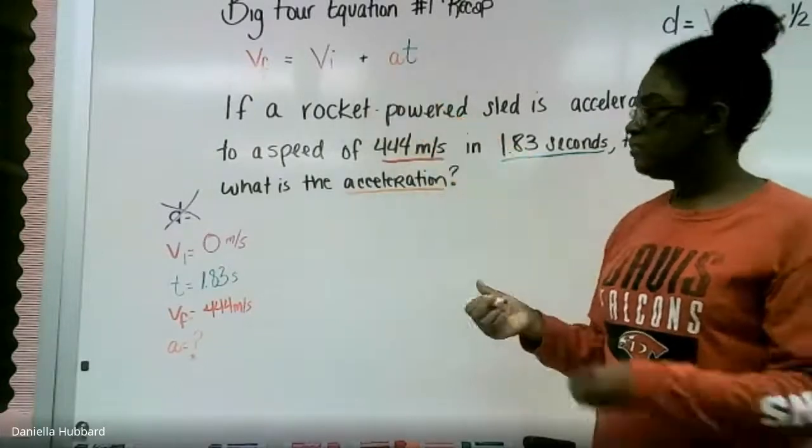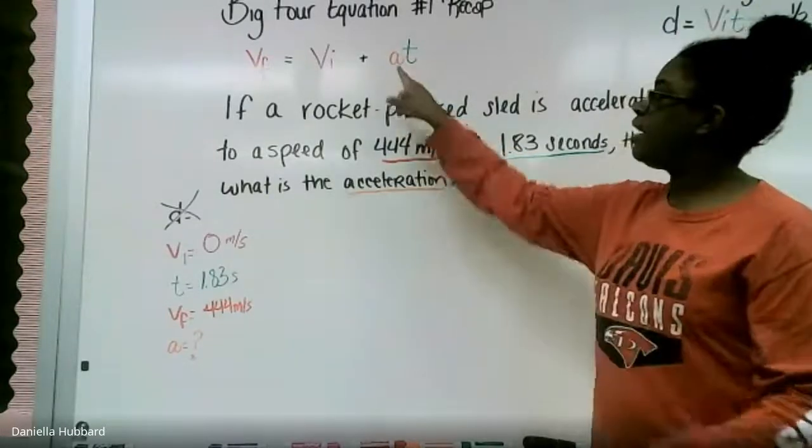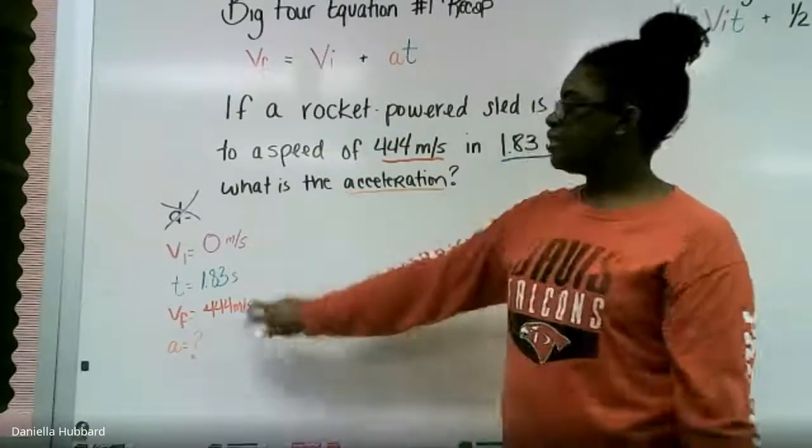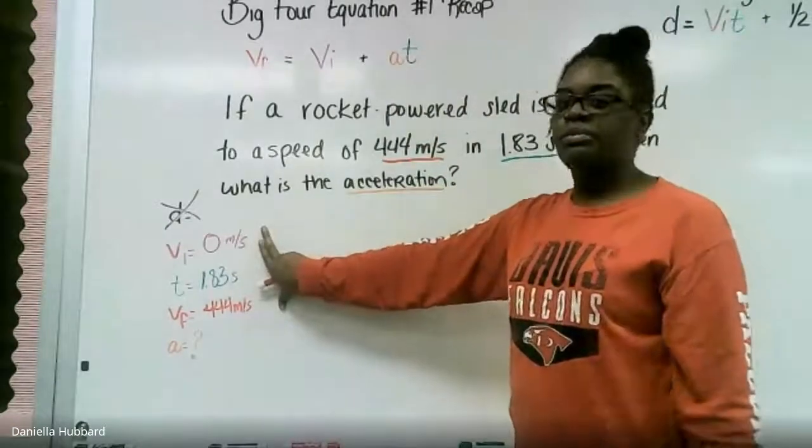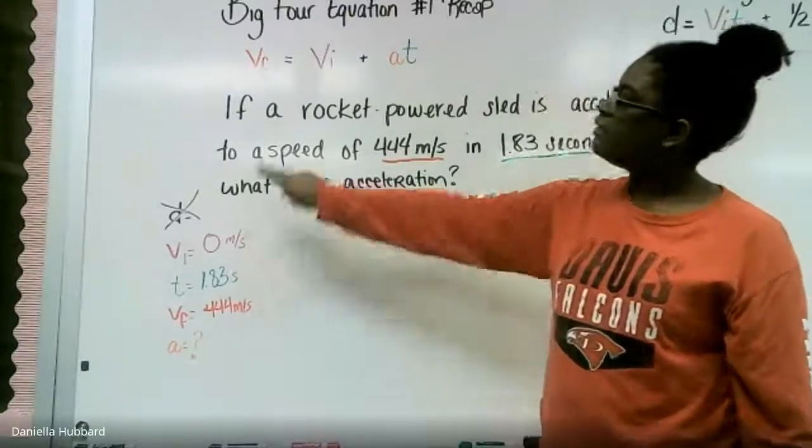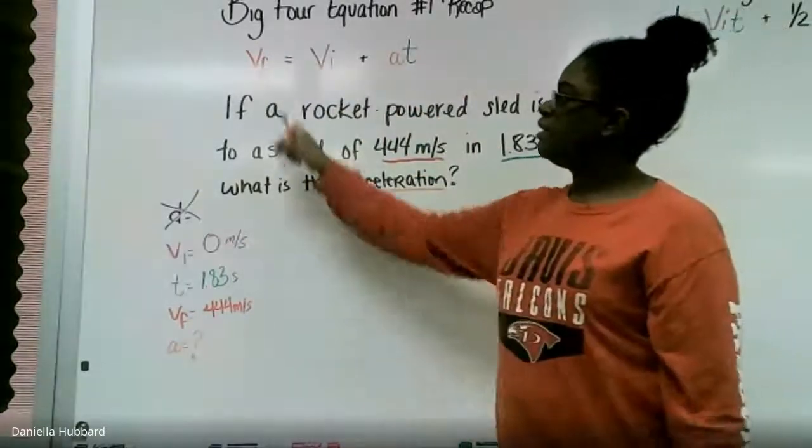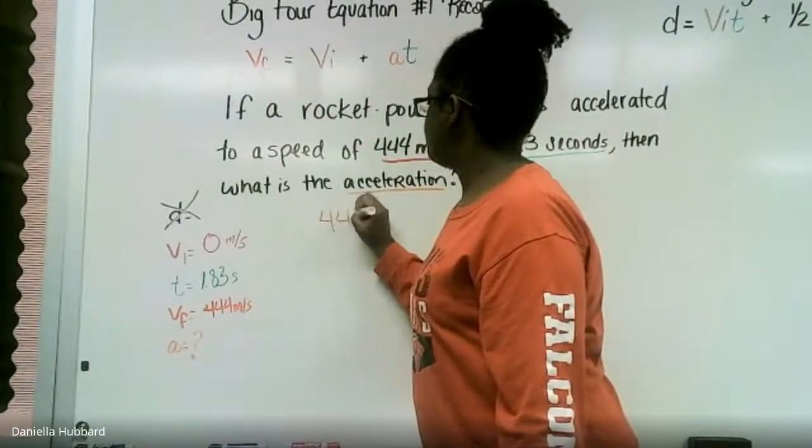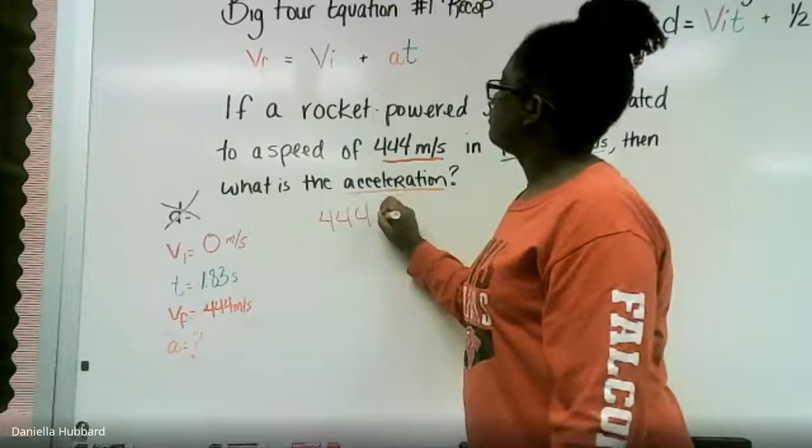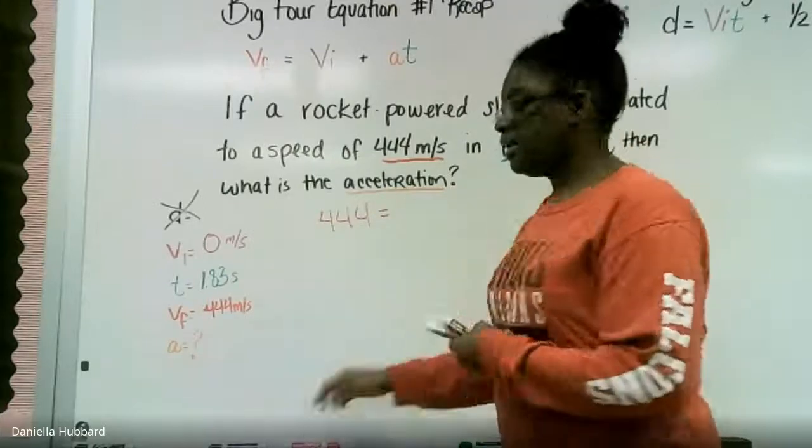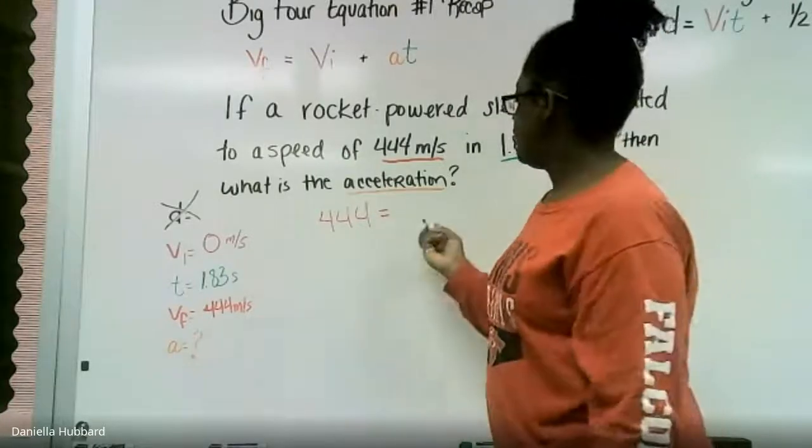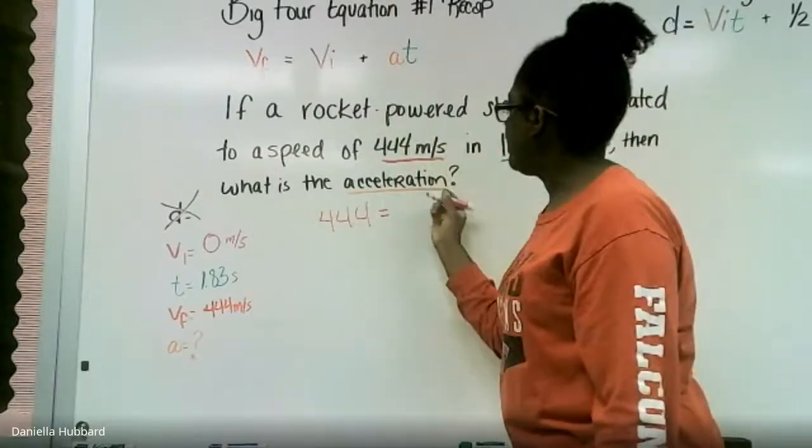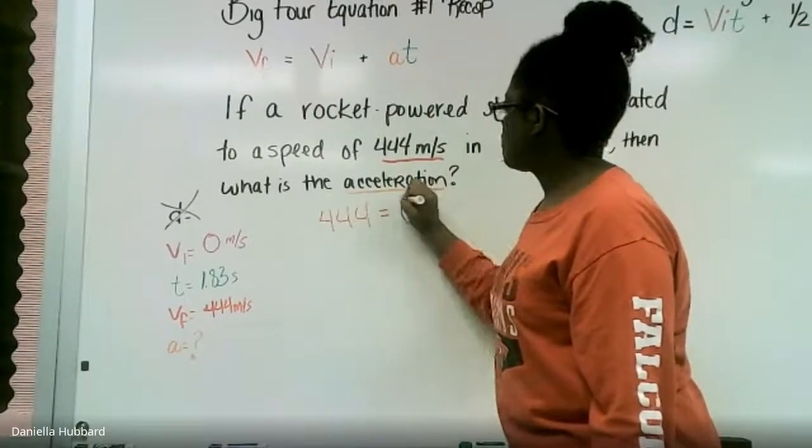vf equals vi plus a times t. And what am I going to do? We're just going to substitute or replace what we have and put it in the equation. So vf is 444, my initial speed, and I'm using a motorized rocket-powered sled, so we're starting from zero.